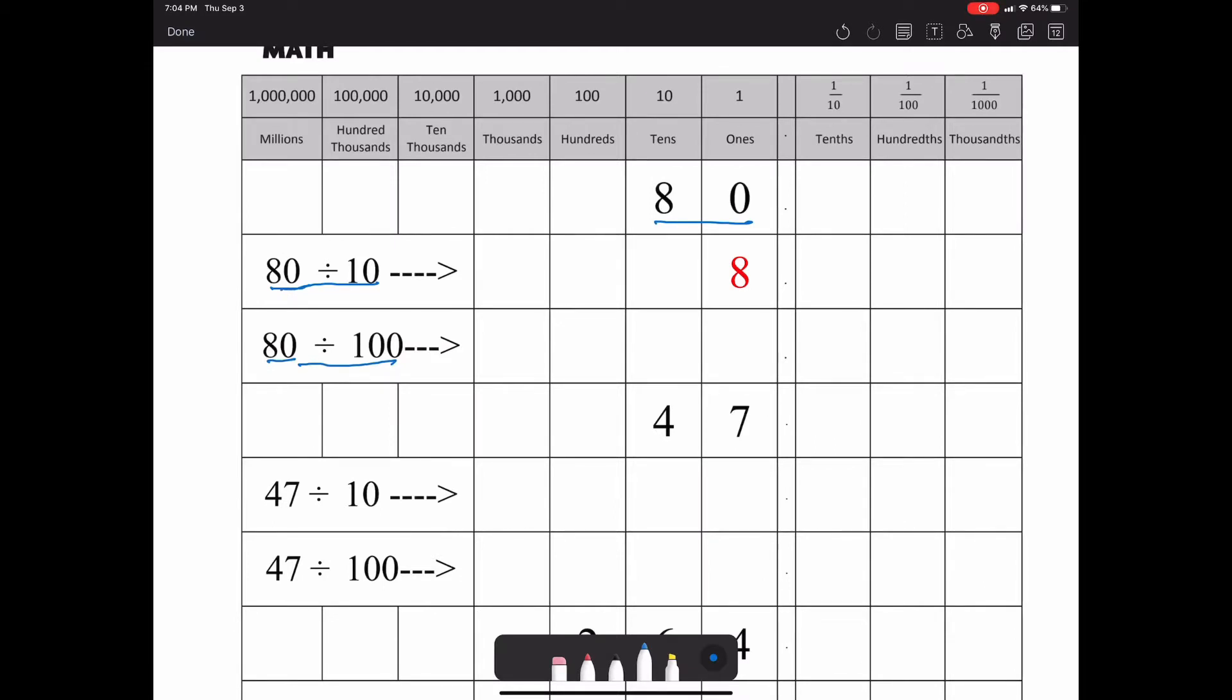If you take 80 and divide it by 10, you're going to get 8. Now that we're dividing, you can see that the 8 shifts in the other direction. Yesterday when we were multiplying, if this was 80 times 100, it would have shifted to 800, so the 8 would have gone this way.